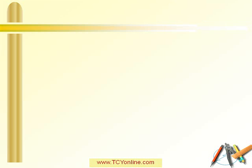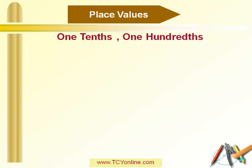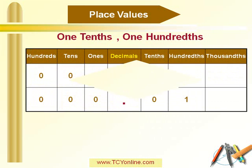Now let's see how to place 1 tenth and 1 hundredth in a place value chart. 1 tenth means 0.1, or 1 out of 10. In 0.1, the point goes in the decimal column and 1 goes in the tenths column. Similarly, 1 hundredth means 0.01. In 0.01, the point goes under the decimal column, 0 goes in the tenths column, and 1 goes in the hundredths column.